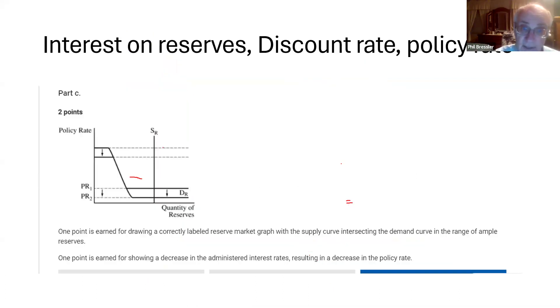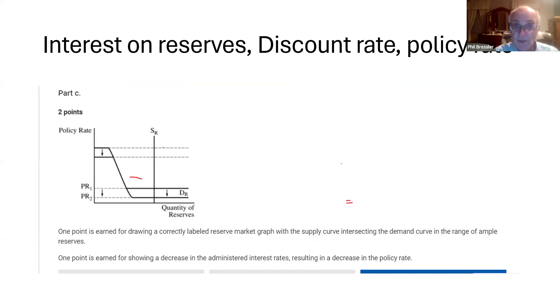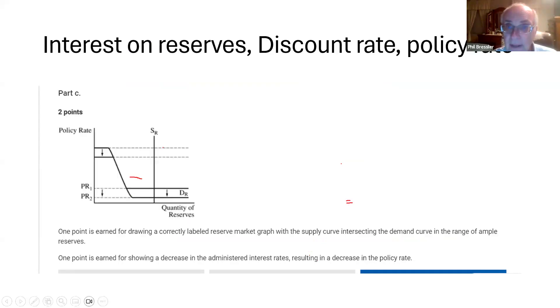Interest on reserves and administered rates are the two things that will come out of the ample reserve framework. Any of the interest rates you see all move in the same direction and will all have the same impact. That's about it — I hope that helped.